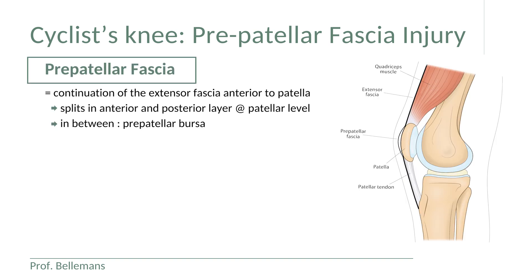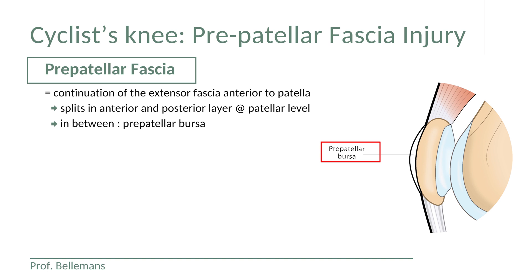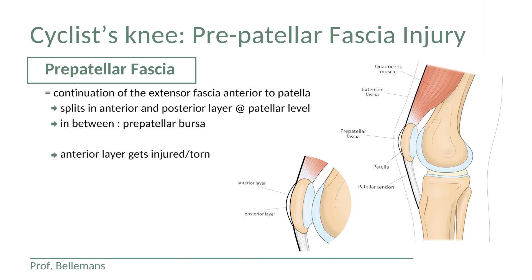The pre-patellar fascia is the continuation of the extensor fascia, which runs anteriorly over the quadriceps muscle, over the patella, and over the patellar tendon. At the level of the patella, the pre-patellar fascia splits into an anterior and posterior layer, and this split forms the pre-patellar bursa. It is the anterior layer that gets injured or torn by the impact onto the front of the knee.